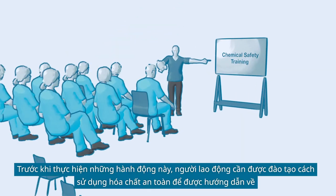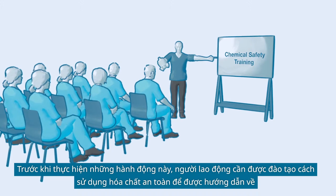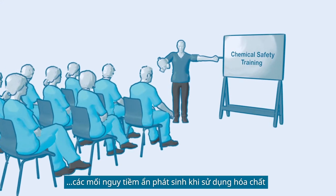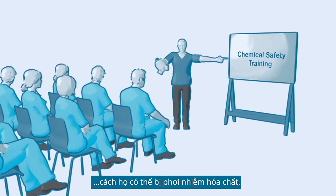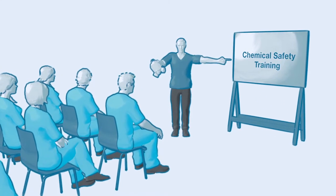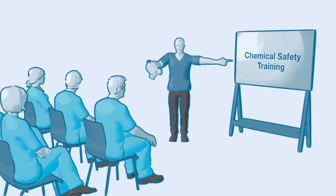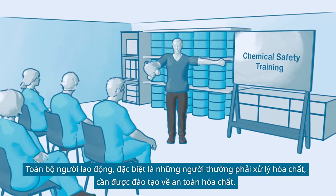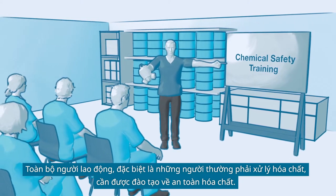These actions need to be supported by a chemical safety handling training, which educates workers on the possible chemical hazards, how they may be exposed, how to handle chemicals properly, and how to protect themselves. All workers, especially those who regularly handle chemicals, should receive chemical safety training.